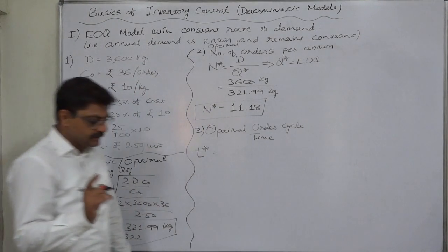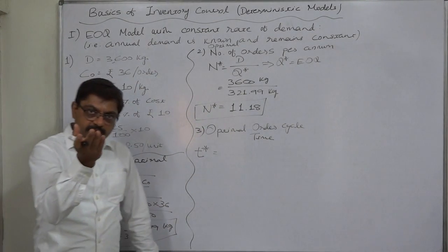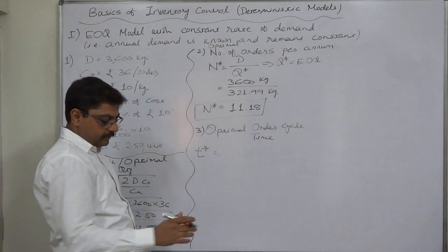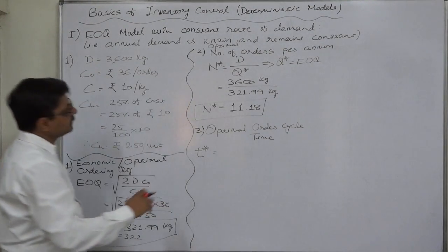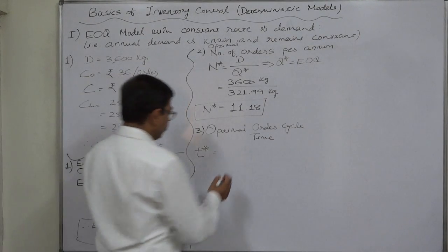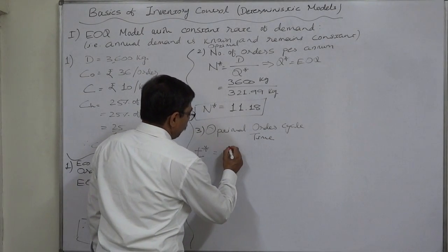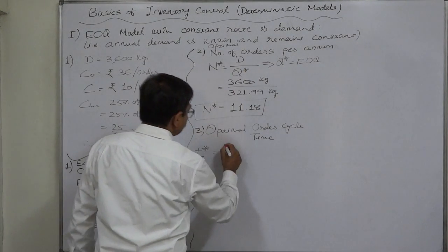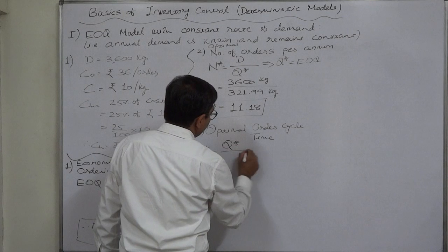First, we are going to use the original formula that will give us answer in number of years. But, we will convert it into either number of days or number of months as we want. The formula of T star is exactly reverse to this. Q star divided by D.